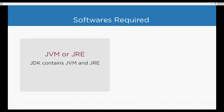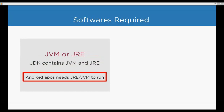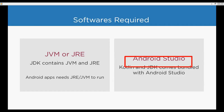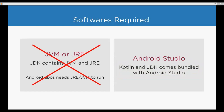When we talk about the software we need, we need JVM and JRE. JVM is the Java Virtual Machine, and we need to run the application on JDK, which contains both JVM and JRE. Beyond that, we need an IDE — an Integrated Development Environment. The required IDE is Android Studio, and when you download Android Studio, it already comes with Kotlin plugins and JDK built in.